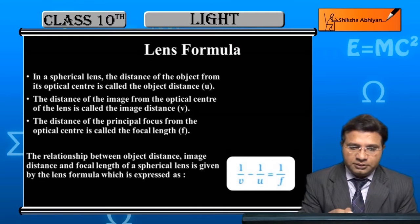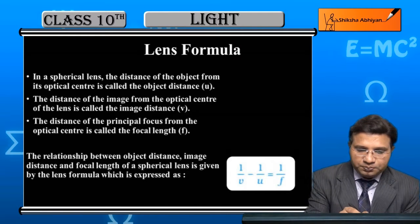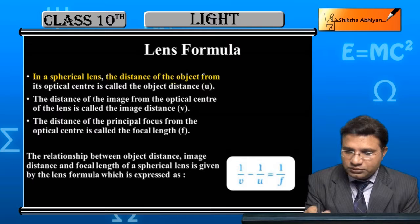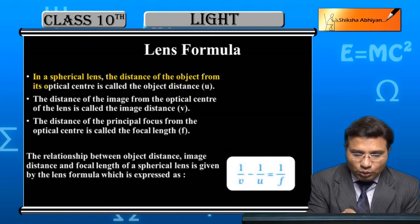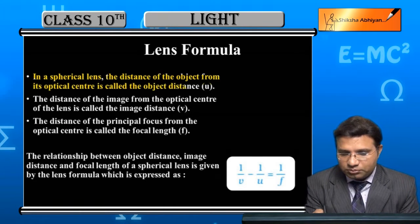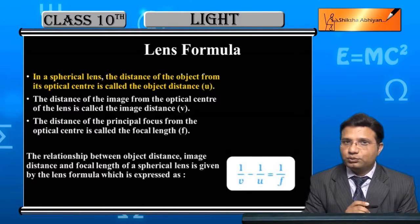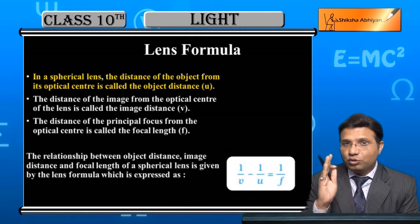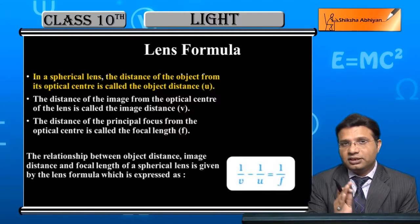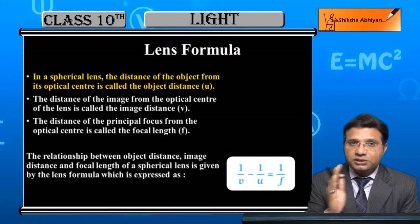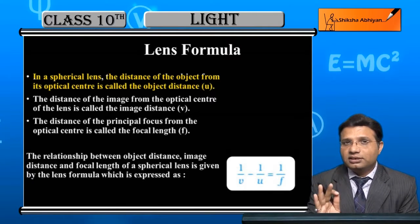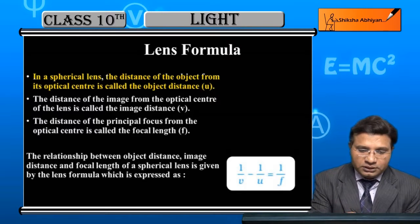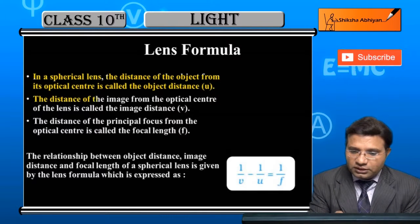In a spherical lens, the distance of the object from its optical center is called the object distance, denoted by u. जो भी distance measure करेंगे वो optical center से करते हैं — lens के optical center से object तक की distance कहलाएगी object distance, denoted by u.